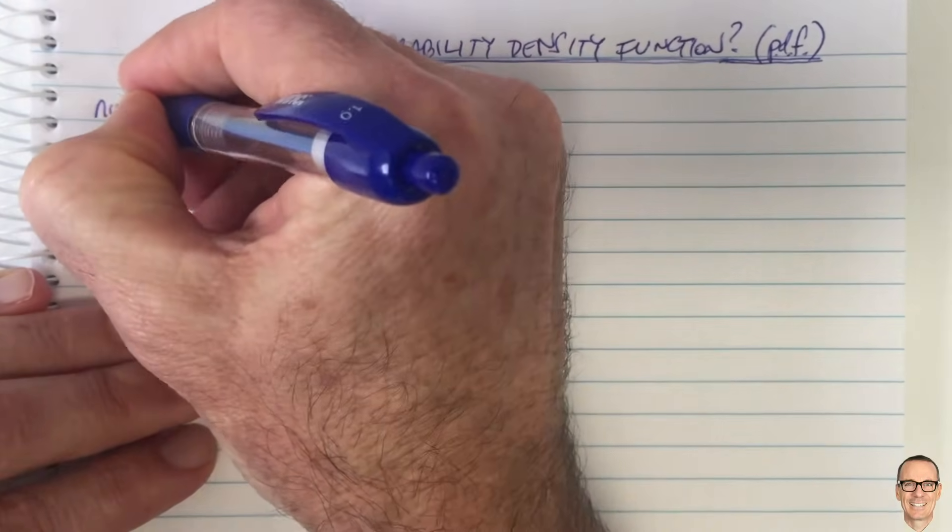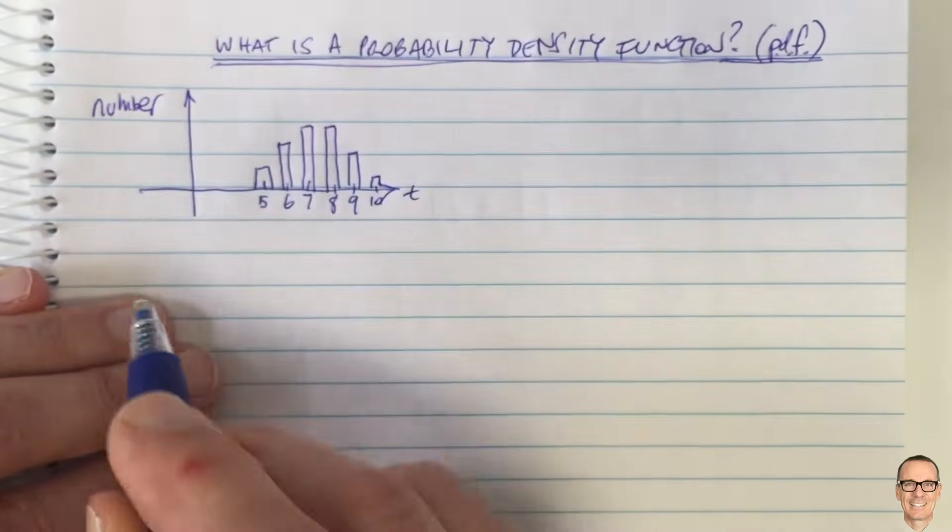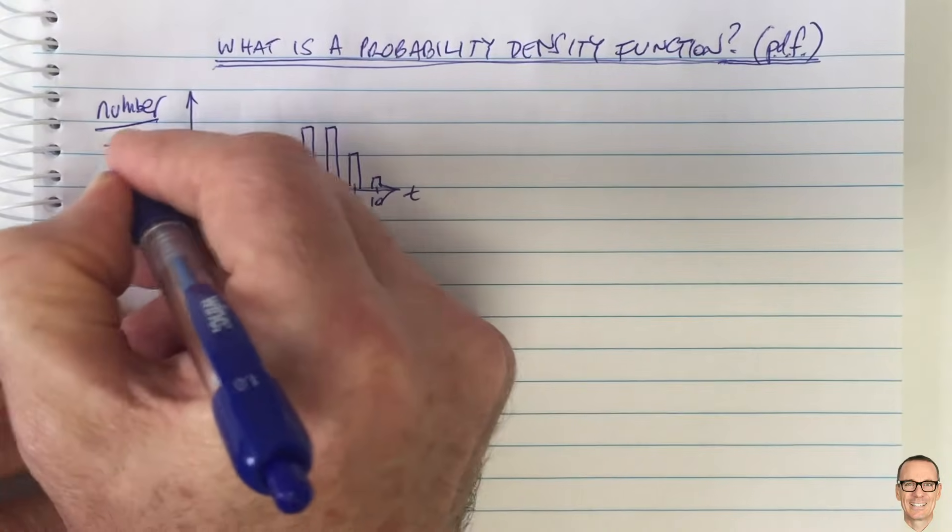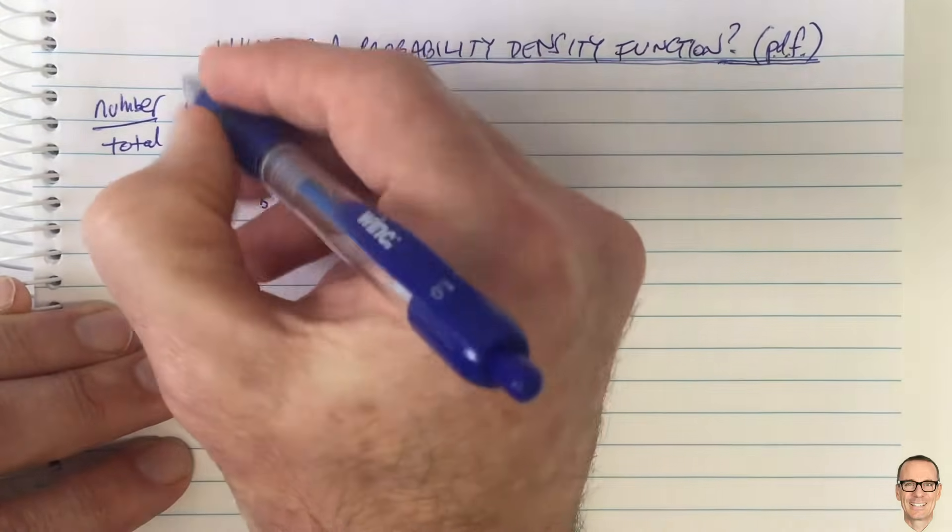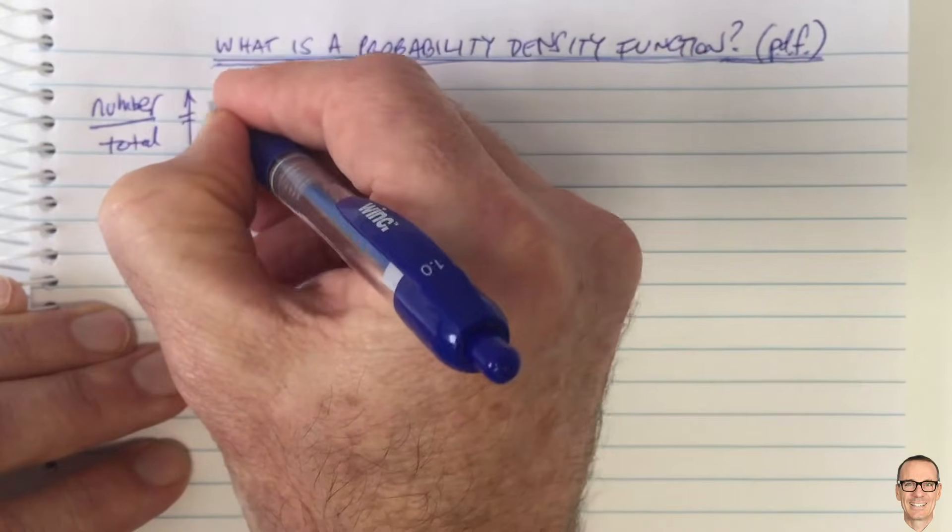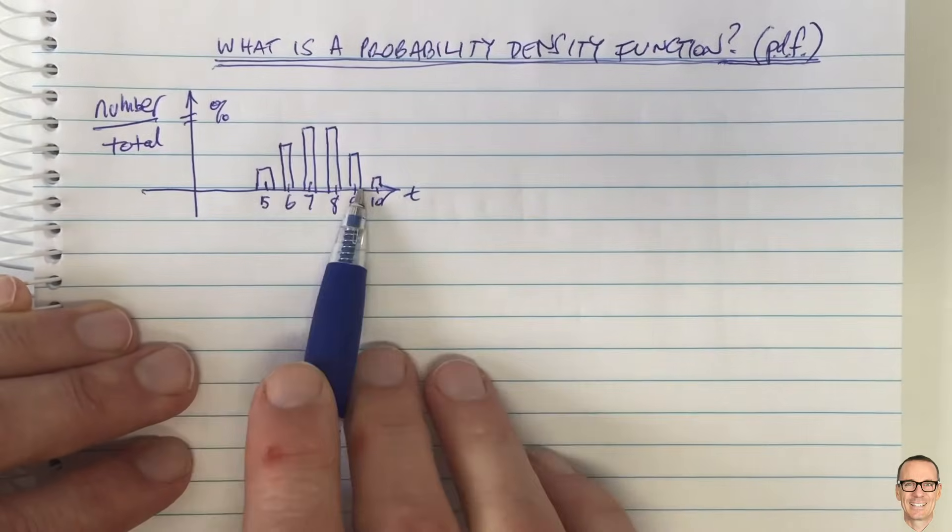Well, what if we take the number and divide by the total? Then all it does is to scale this axis, and it gives us a percentage of the total.